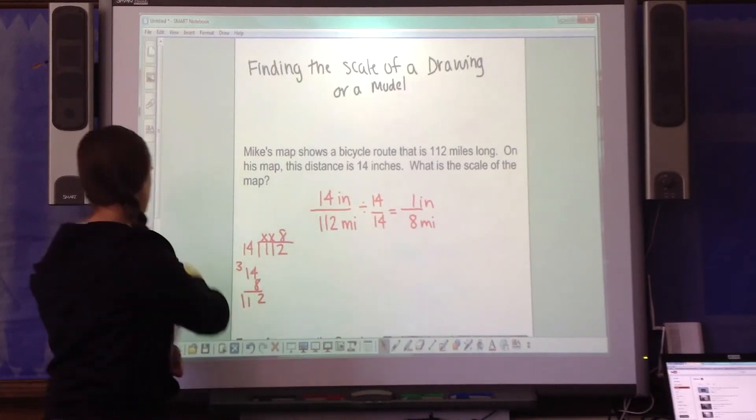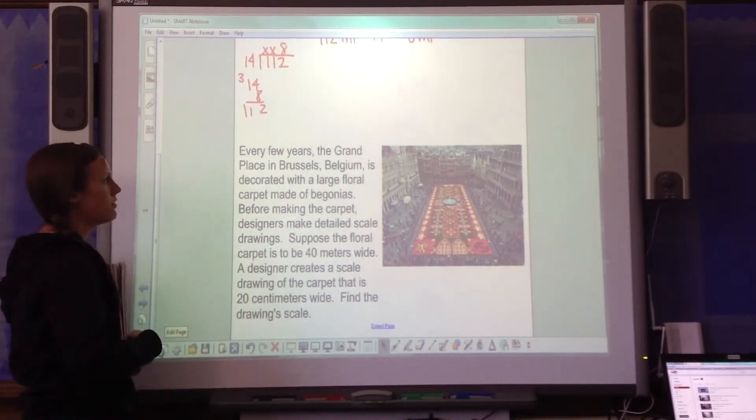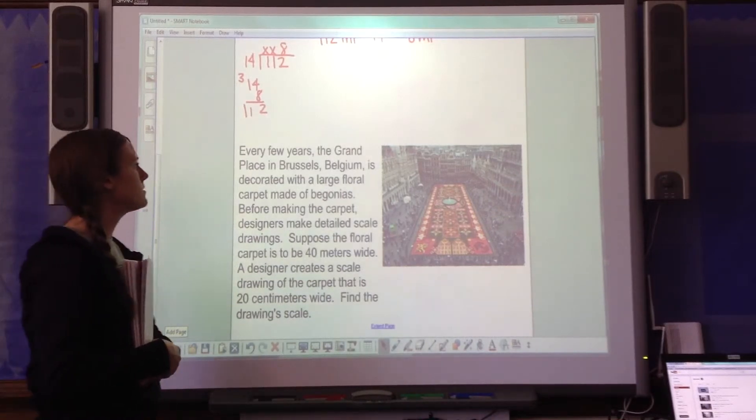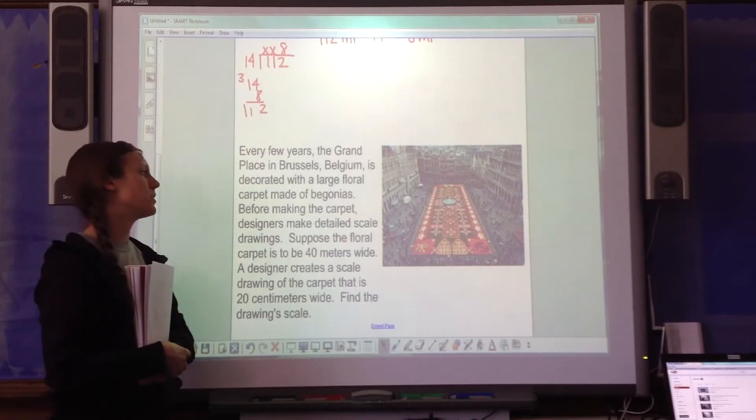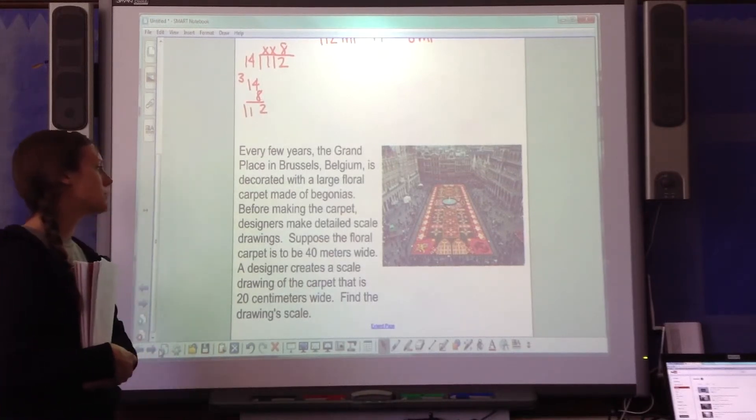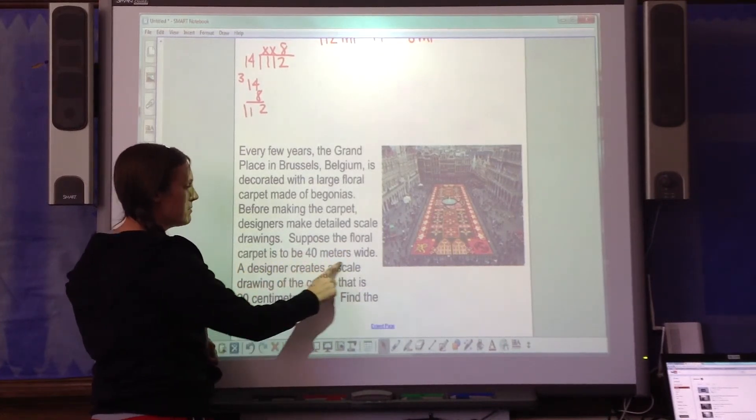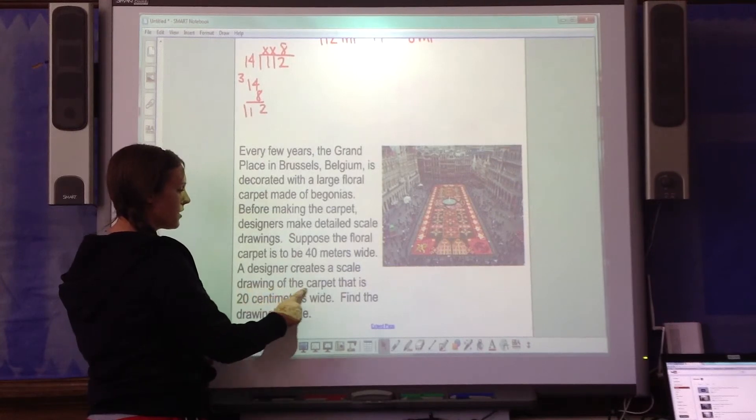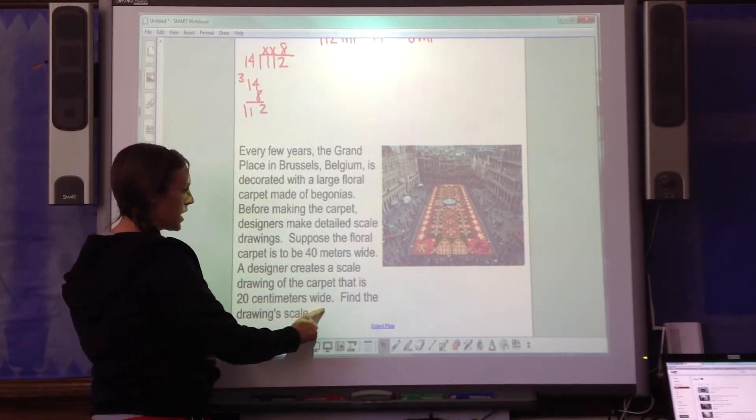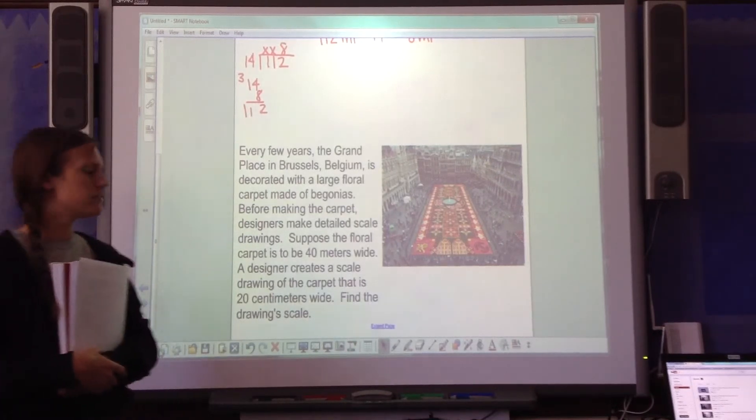All right, your turn. Every 3 years, the grand place in Brussels, Belgium, is decorated with a large floral carpet made of begonias. Before making the carpet, designers make detailed scale drawings. Suppose the floral carpet is to be 40 meters wide. A designer creates a scale drawing of a carpet that is 20 centimeters wide. Find the drawing scale. Go ahead and try this on your own.